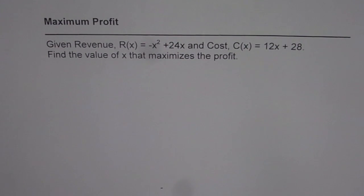Maximum profit. Given revenue R(x) = -x² + 24x and cost C(x) = 12x + 28, find the value of x that maximizes the profit.